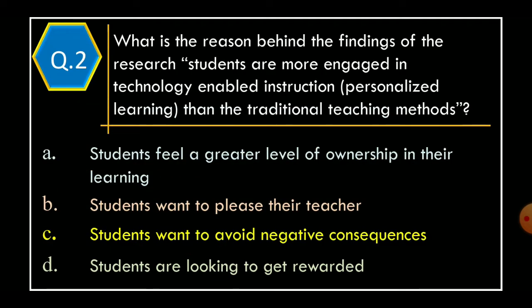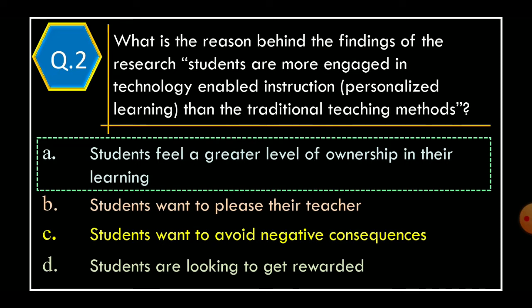Question 2: What is the reason behind the research finding that students are more engaged in technology-enabled instruction and personalized learning than traditional teaching methods? Option A: Students feel a greater level of ownership in their learning. Option B: Students want to please their teacher. Option C: Students want to avoid negative consequences. Option D: Students are looking to get rewarded. The correct option is Option A: Students feel a greater level of ownership in their learning.